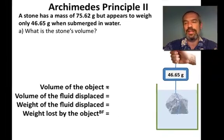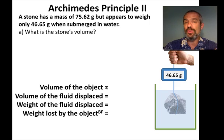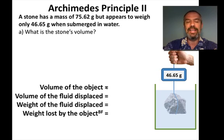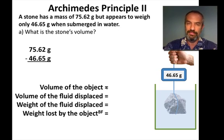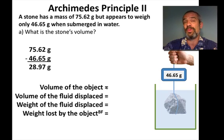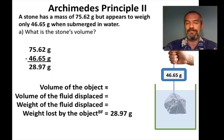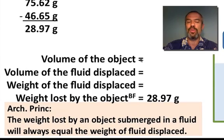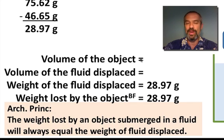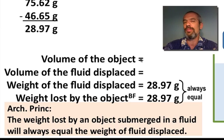So what's the stone's volume? We don't know that, so we can't start at the top of this table. Sometimes we start at the top, other times we start at the bottom. In this particular problem I'm trying to find the volume of the object, so I'm going to work at the bottom. I can tell the weight loss by the object because I know the weight out of water and in water — subtracting those gives 28.97 grams as the weight loss, which is like the buoyant force. According to Archimedes' principle, the weight loss by an object on submersion in a fluid will always equal the weight of the fluid displaced, so the weight of the fluid displaced must be 28.97 grams.